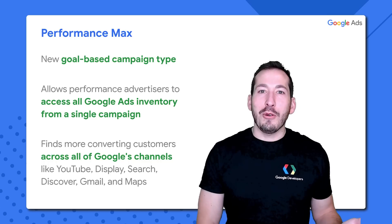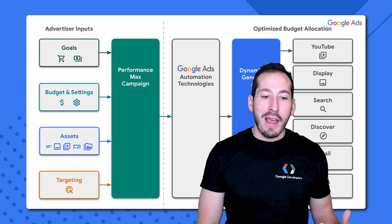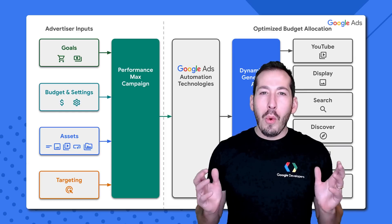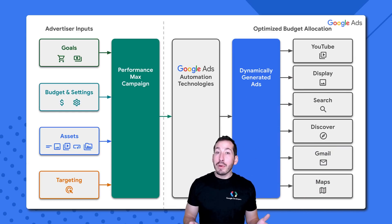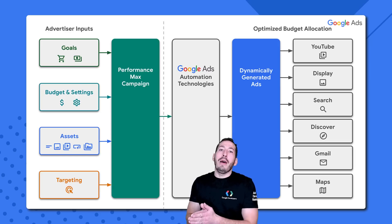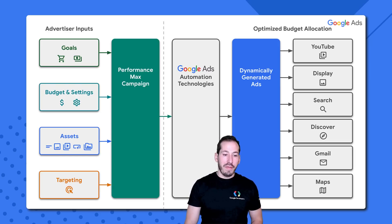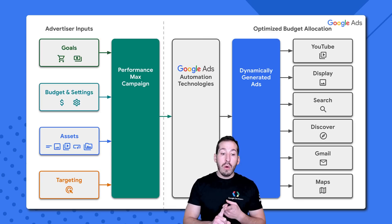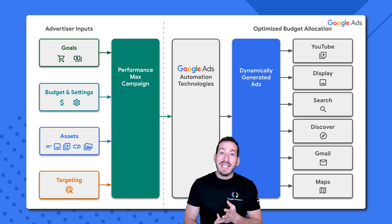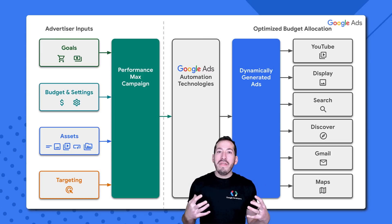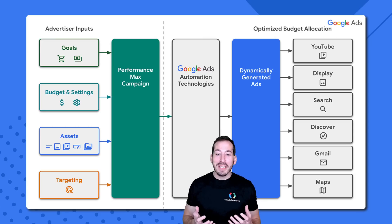Let's break this down graphically. What is Performance Max from a developer perspective? Basically, let's look at this as an input-output operation. On the left side of our screen, we've got all of the inputs that we need to set: the goals, the budget of our campaign, the settings, what sort of assets we're going to apply, the targeting. We're going to bundle all of that up into our Performance Max campaign.